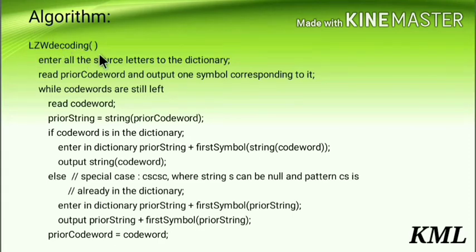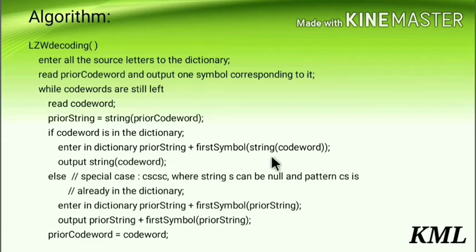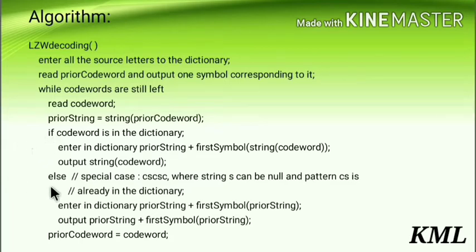Here I have the LZW decoding algorithm. First, enter all the source letters to the dictionary. Read the prior codeword and output one symbol corresponding to it. While codewords are still left, read codeword. Set prior_string equal to the string if the codeword is in the dictionary, then enter in dictionary prior_string plus first symbol of string of codeword. Else, enter in dictionary prior_string plus first symbol of prior_string, and output prior_string plus first symbol of prior_string. Then set prior codeword equals codeword. So you have two conditions — if and else — and we will see this while solving the problem.